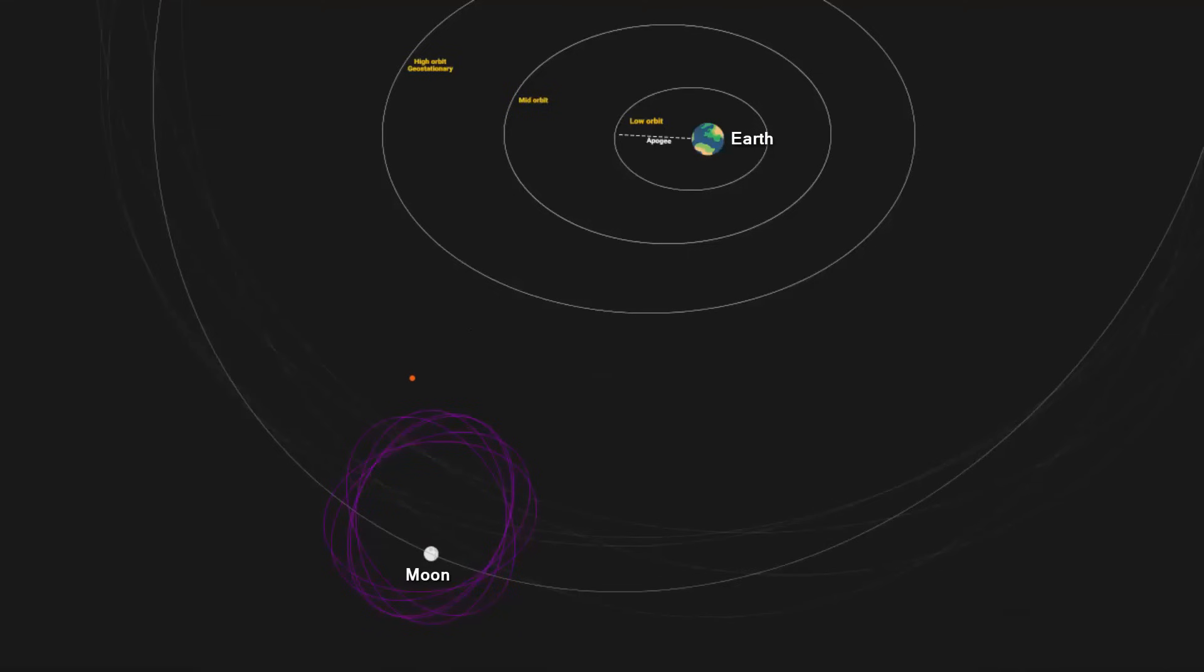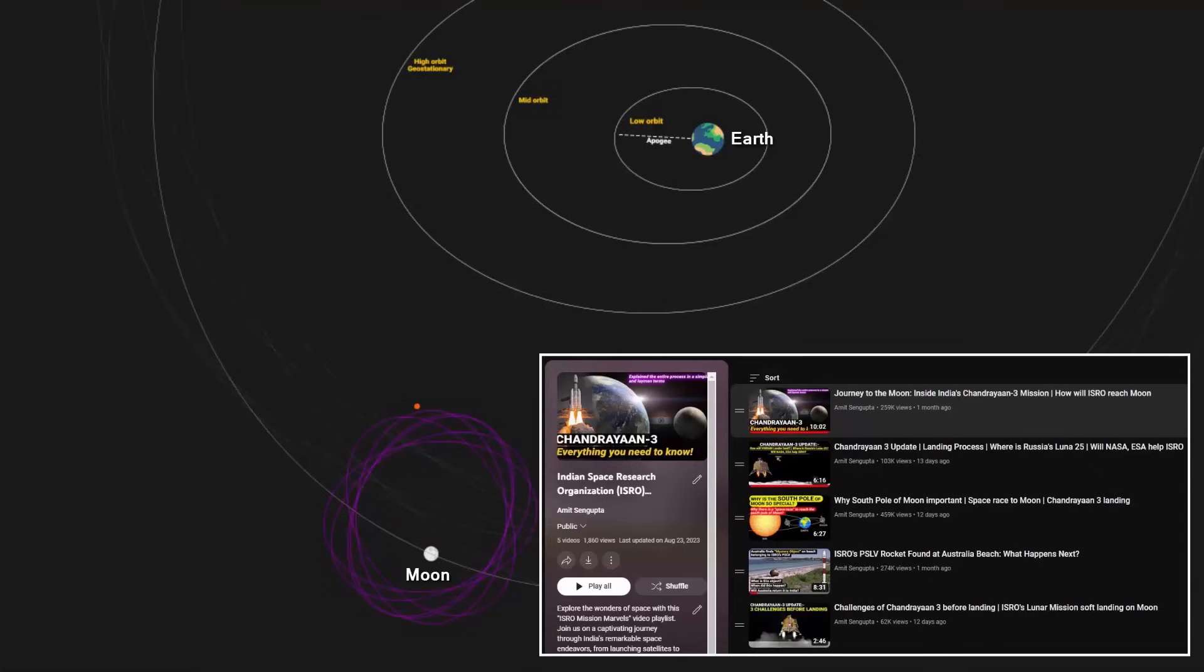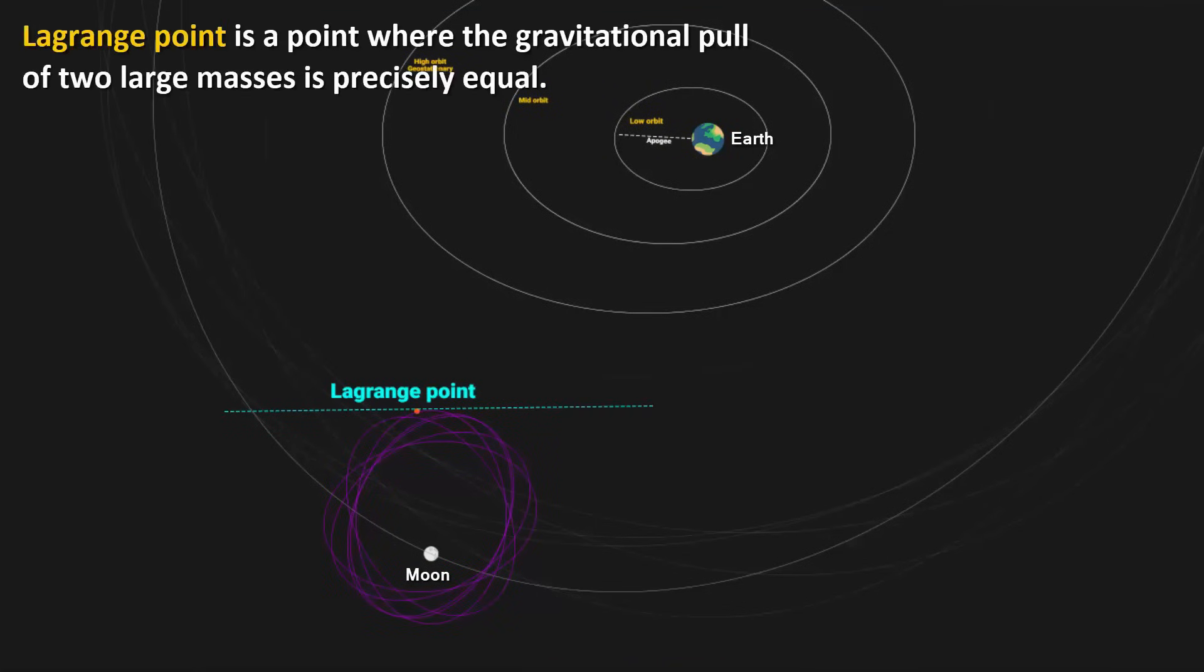If you can recollect, in the Chandrayaan-3 lunar mission video, I have explained about Lagrange point. A Lagrange point is a point where the gravitational pull of two large masses is precisely equal. This point or position is called the Lagrange point. This point is also a gravitationally stable point.